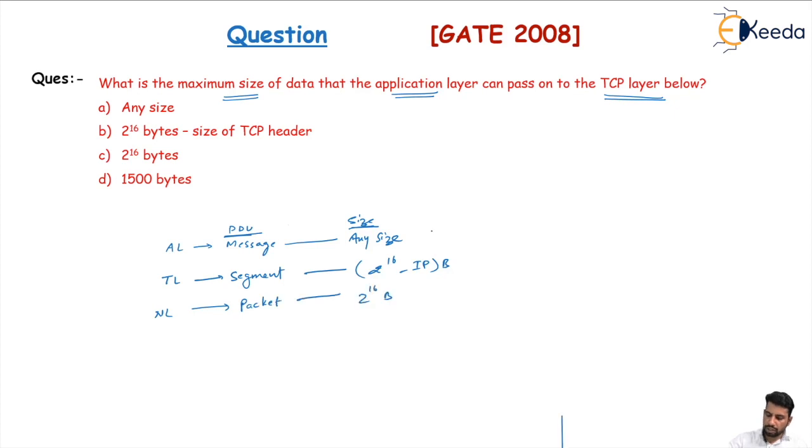So the application layer can pass any size of data to the transport layer and we will divide this into segments. The segment's maximum size is 2^16 minus IP header size.